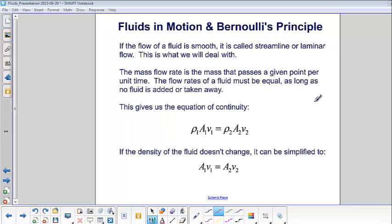This gives us the equation of continuity. So the density at one part times the area times the velocity has to be equal to the same at a different part.